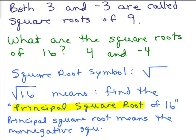So the principal square root means the non-negative one. So it could be 0, like the square root of 0, or it's going to be a positive number. Okay, so let's go on.